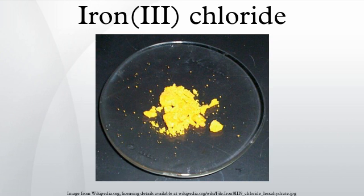The ferric chloride test is a traditional colorimetric test for phenols, which uses a 1% iron chloride solution that has been neutralized with sodium hydroxide until a slight precipitate of FeOH is formed. The mixture is filtered before use. The organic substance is dissolved in water, methanol, or ethanol, then the neutralized iron chloride solution is added; a transient or permanent coloration indicates the presence of a phenol or enol. This reaction is exploited in the Trinder spot test, which is used to indicate the presence of salicylates, particularly salicylic acid, which contains a phenolic OH group.